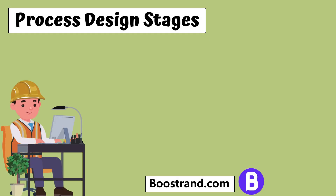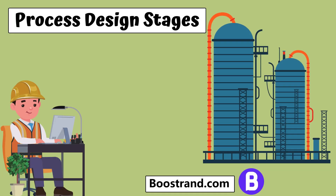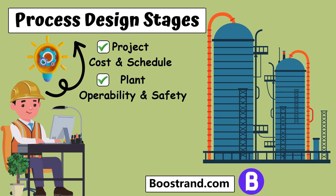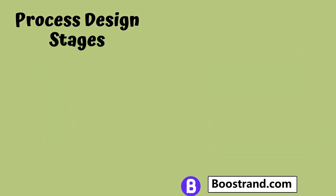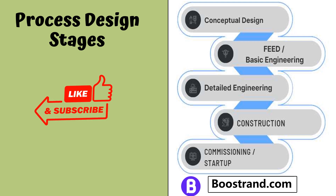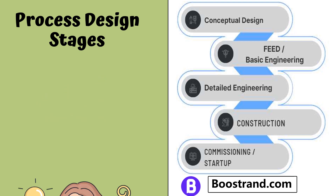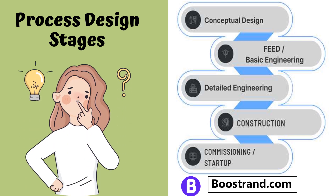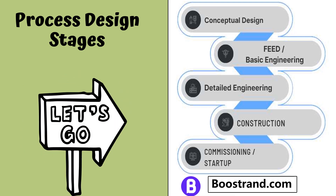A process engineer has a great role in any oil and gas, chemical, or petrochemical project. As his process design determines the cost and schedule of the project, operability and safety of the plant shall be determined. In this video, we'll take a deep dive into the various stages of process design, from the initial conceptual design to the final startup of the plant, and see how each stage affects and is affected by process design.